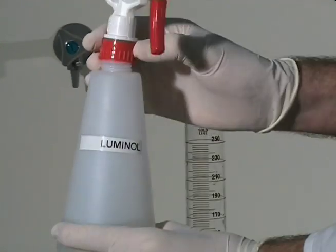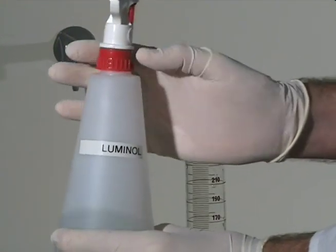When luminol reacts with hydrogen peroxide, it produces energy in the form of light. But this reaction is very slow and you might not be able to see the light.